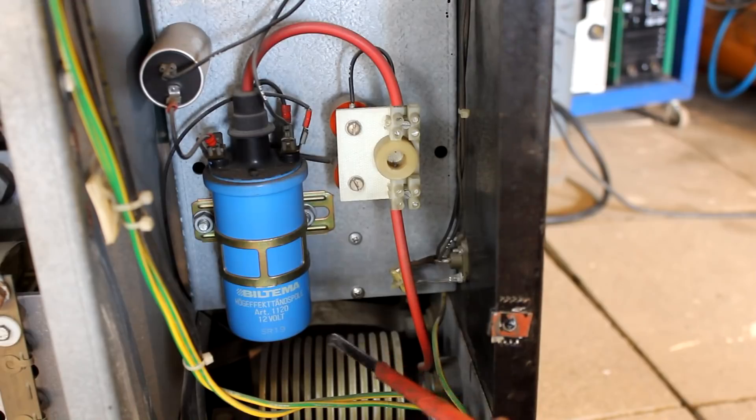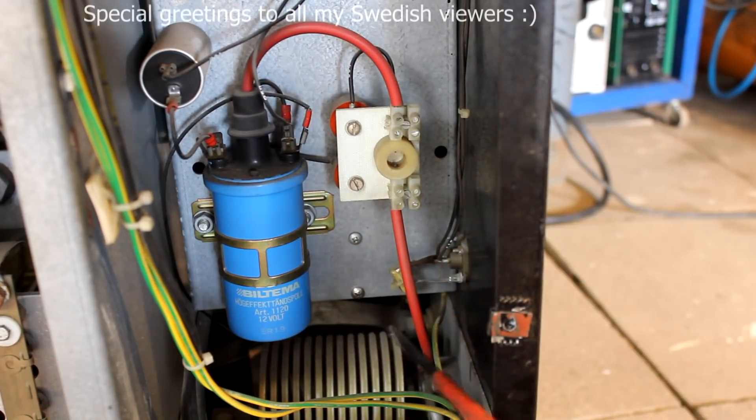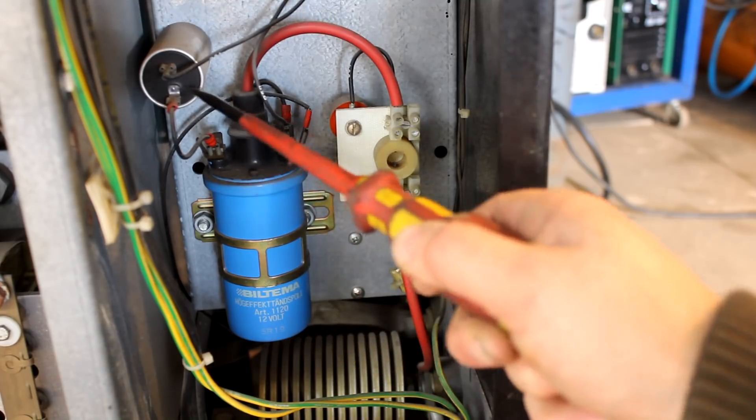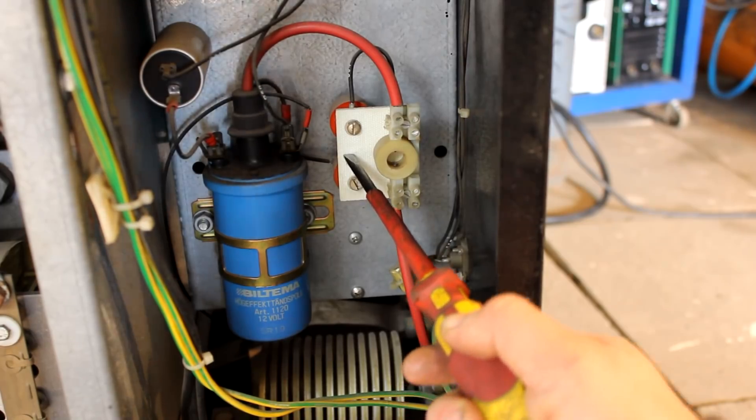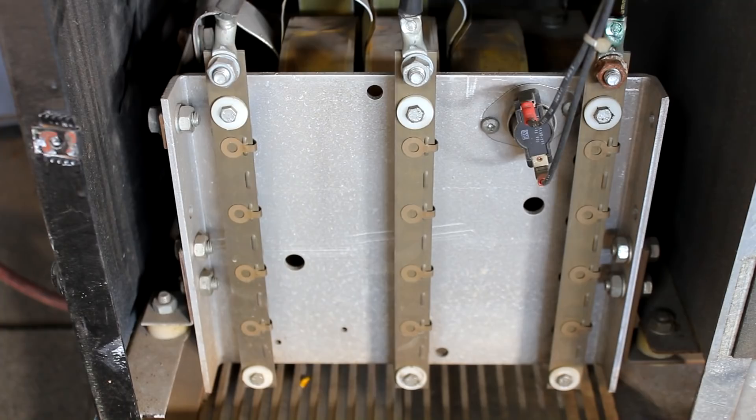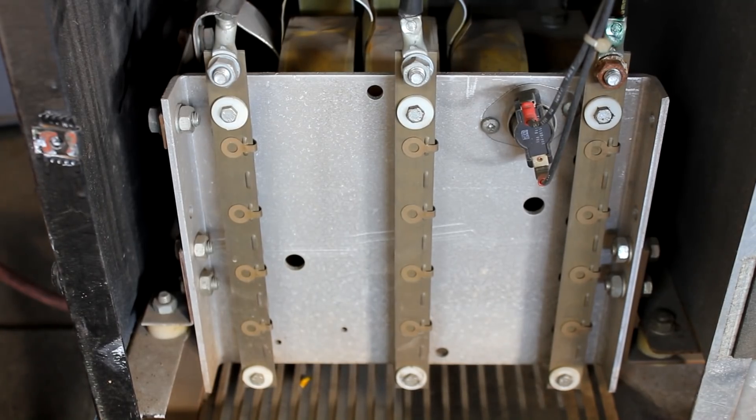And the next component that we see here, this blue tube here, is apparently an automotive-type ignition coil. And this is obviously a high-voltage circuit. And it seems to be part of the high-frequency start function of this machine. And we'll talk a little bit more about that later on.